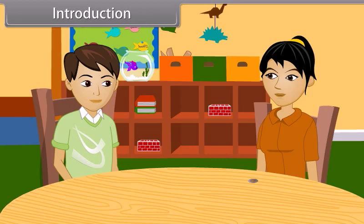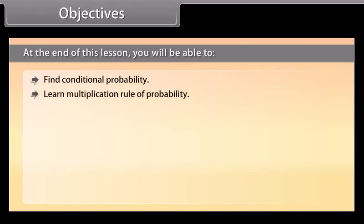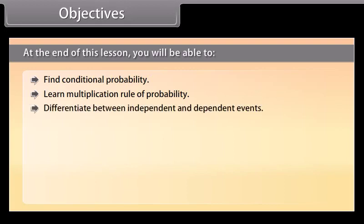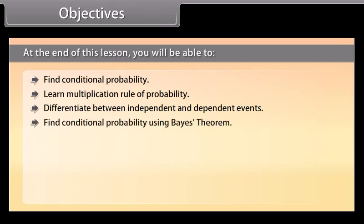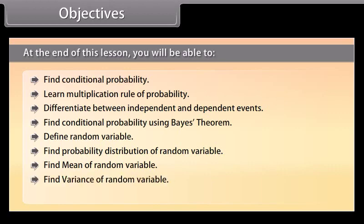Objectives: At the end of this lesson, you will be able to find conditional probability, learn the multiplication rule of probability, differentiate between independent and dependent events, find conditional probability using Bayes' theorem, define random variable, find probability distribution of a random variable, find mean of a random variable, find variance of a random variable, and find probability using binomial distribution.